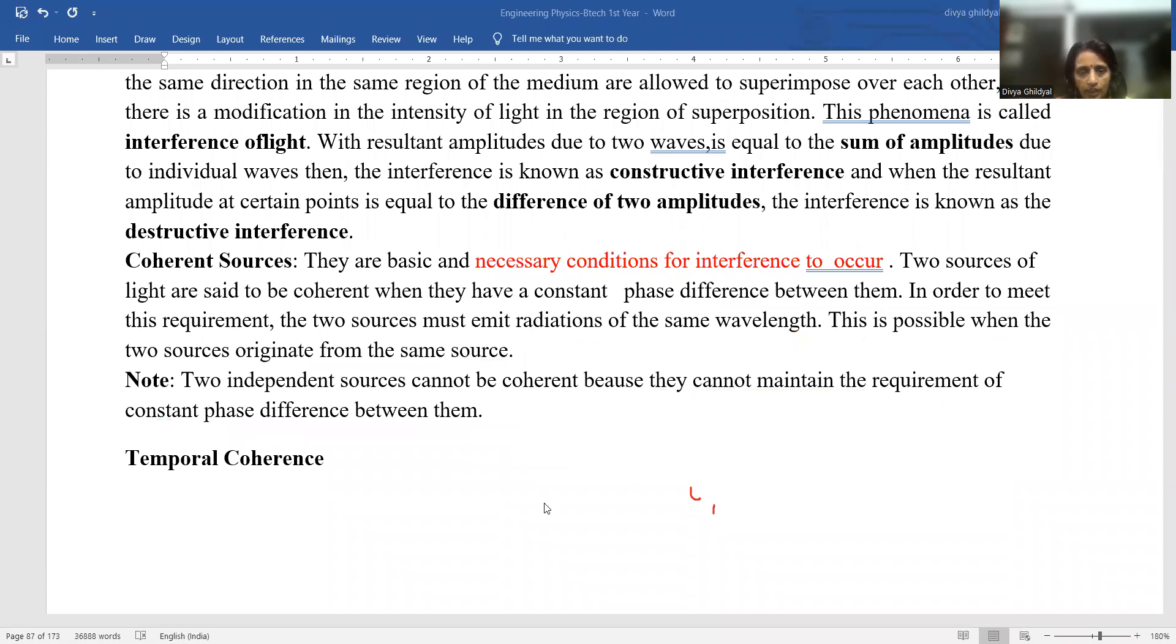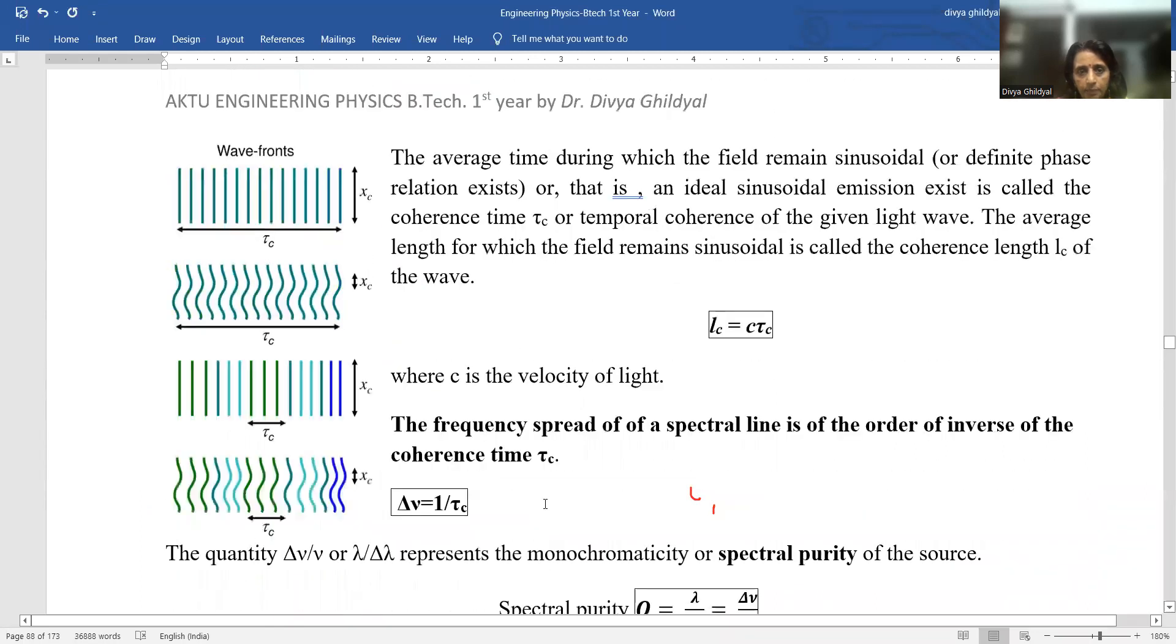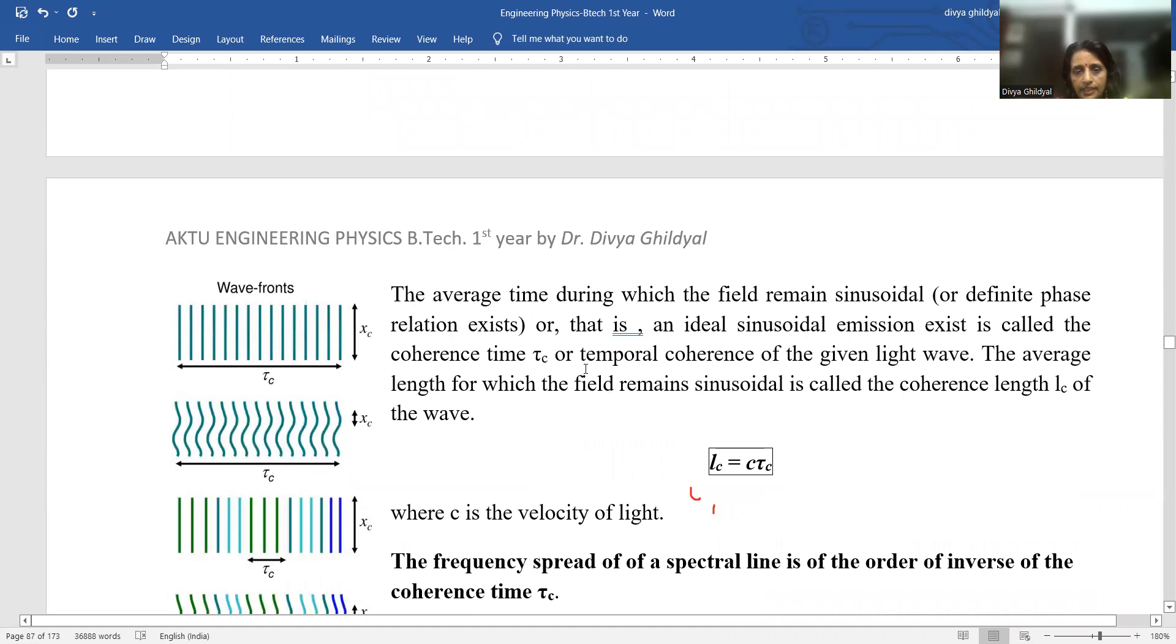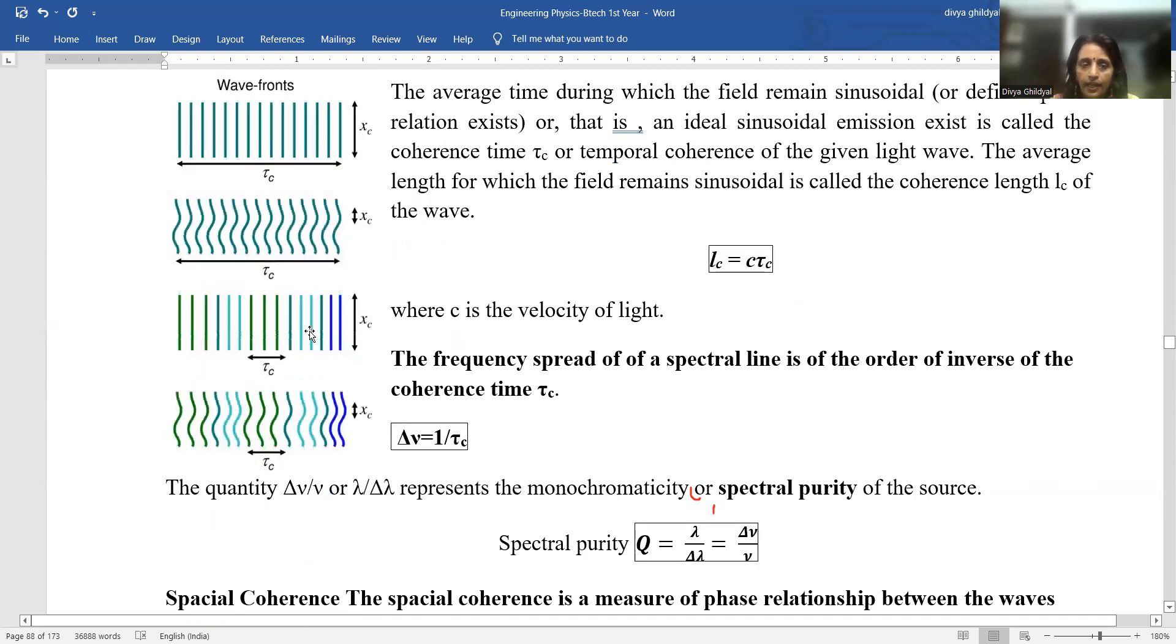At times one mark question in section A itself is asked: can two independent sources be coherent? The answer to it is no, because independent sources cannot maintain the requirement of constant phase difference between them. So this is a very favorite question of section A. Now coherence. You can divide it again into temporal coherence and spatial coherence. Coherence, that means the average time during which the field will remain sinusoidal or will have a definite phase relationship. That is the average length for which the field remains sinusoidal, that means in the form of a sine wave, is called the coherence length of the wave. And length is distance into time. So C is speed of light and tau C is the time taken by the wave for maintaining this coherence length.